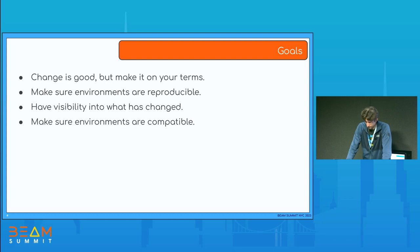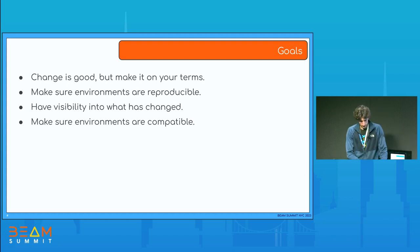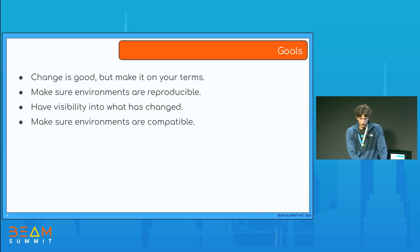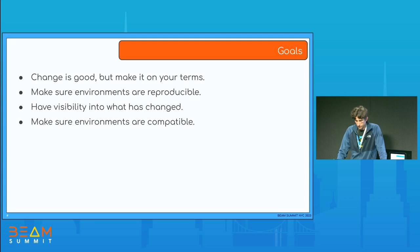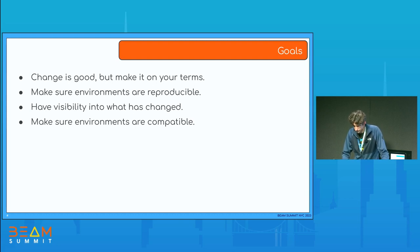If you cannot recreate a virtual environment in a reproducible manner, you may have troubles even installing Beam. Sometimes people encounter errors where they can run the pipeline locally in the direct runner, but when running in a remote runner, it fails with module not found or attribute errors — signaling that dependencies required for the pipeline are not available on the workers. The goals are: make changes on your own terms by choosing when to upgrade, make your launch and runtime environments reproducible, have visibility into what has changed, and ensure environments are compatible.